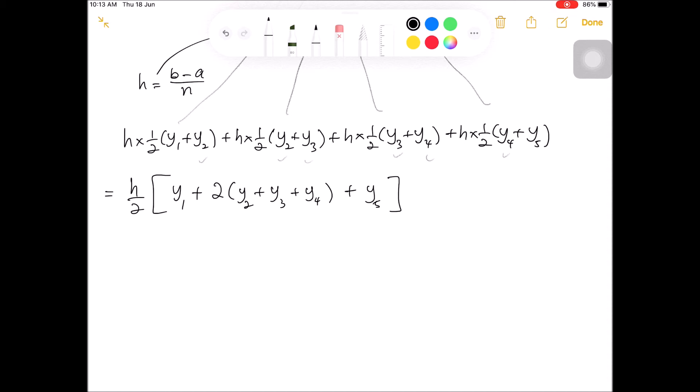If there are big N number of data points, I can modify this expression to be Y1 plus 2 Y2 plus Y3 plus until Y big N minus 1 and the last data point YN, or I can use the summation notation that is 2 sigma I equals to 2 until big N minus 1, YI, plus Y big N.